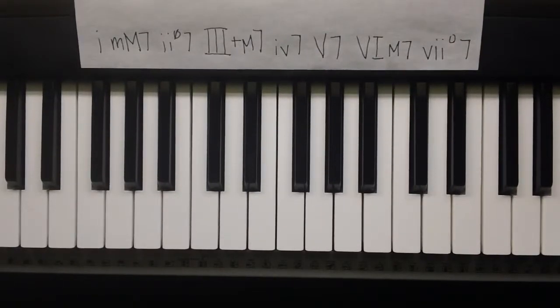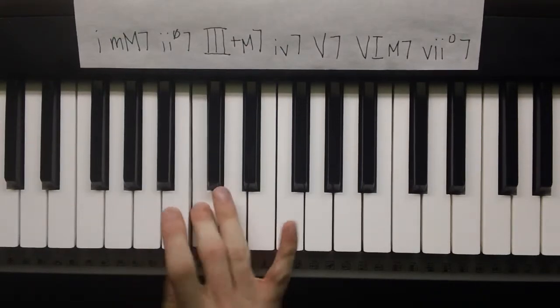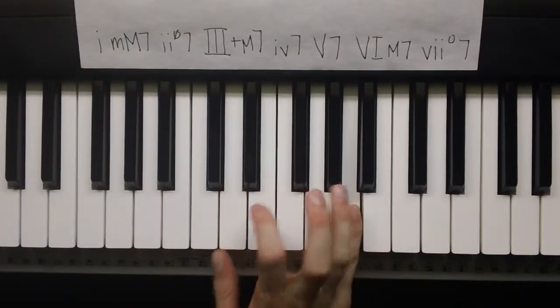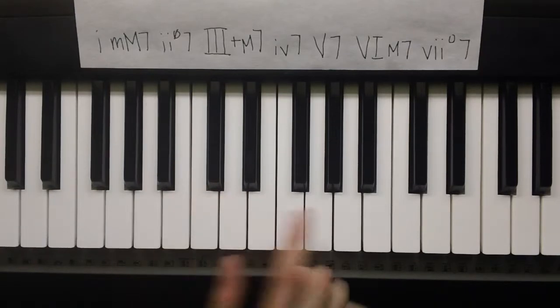Good afternoon, Nathan Davis here again. Now I'm going to show you the Roman numeral analysis for the 7th chords built on the A harmonic minor scale. You remember the A harmonic minor? Start on A and you raise that 7th note.